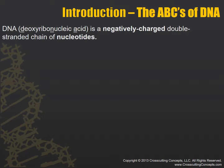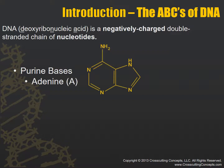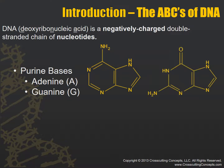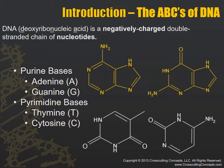DNA stands for deoxyribonucleic acid. It is a negatively charged double-stranded chain of nucleotides. It's negatively charged and it's made up of nucleotides. We have purine bases, which include adenine and guanine, and then we have pyrimidine bases, which include thymine and cytosine. Our purine bases are double rings, and our pyrimidine bases are single rings.